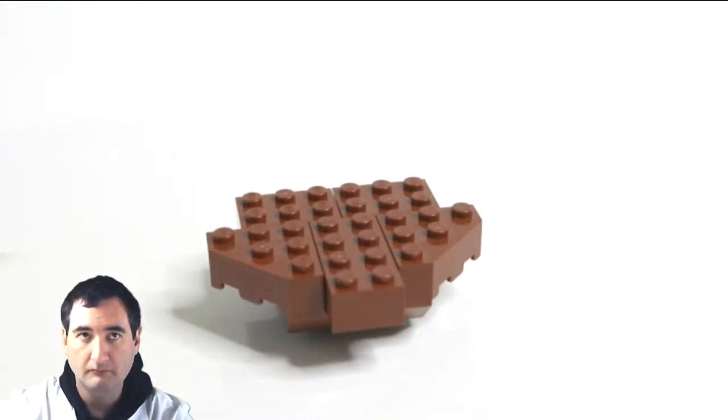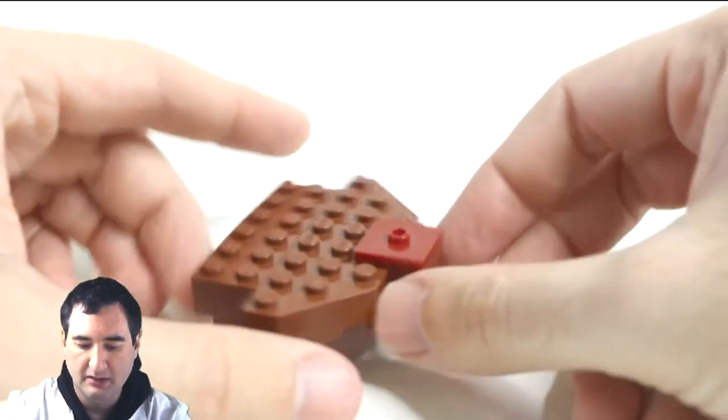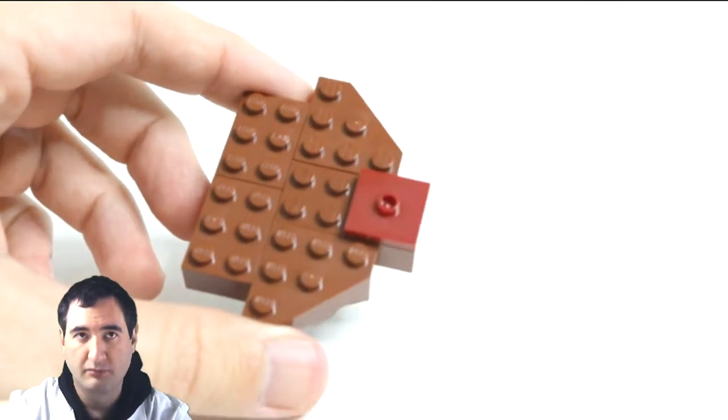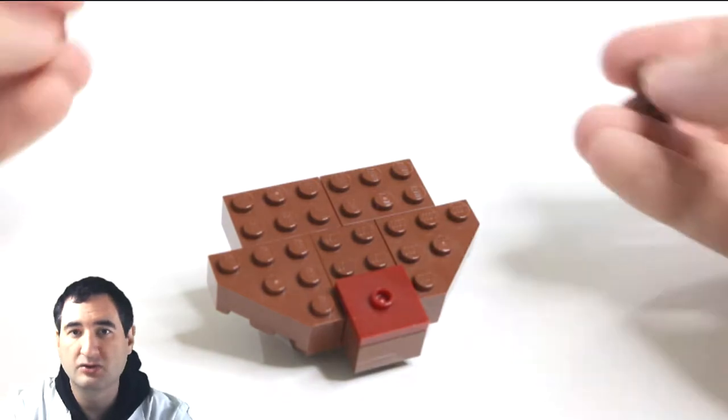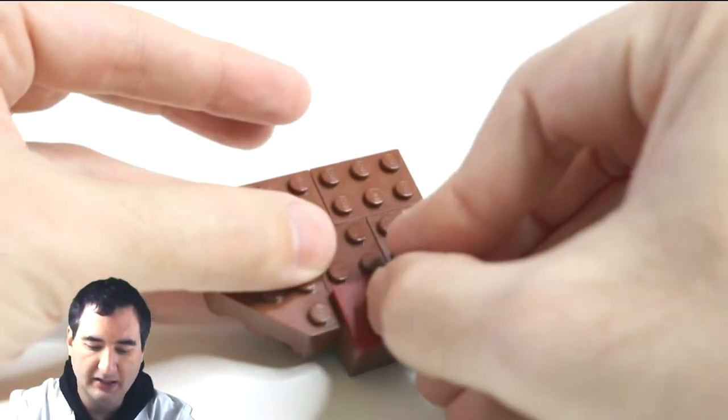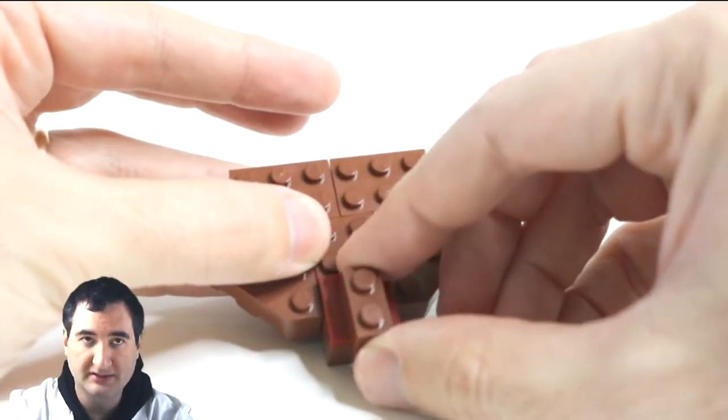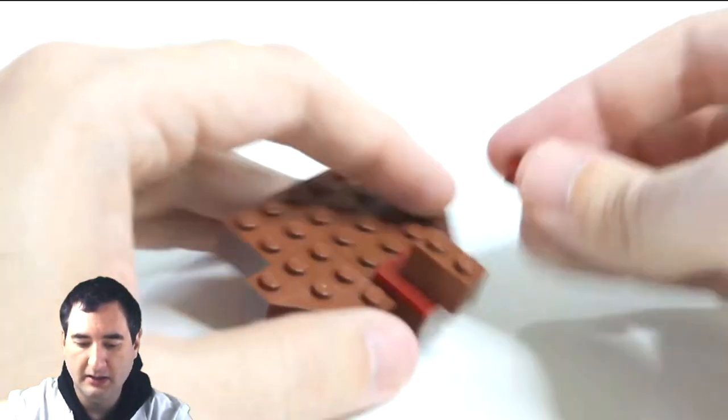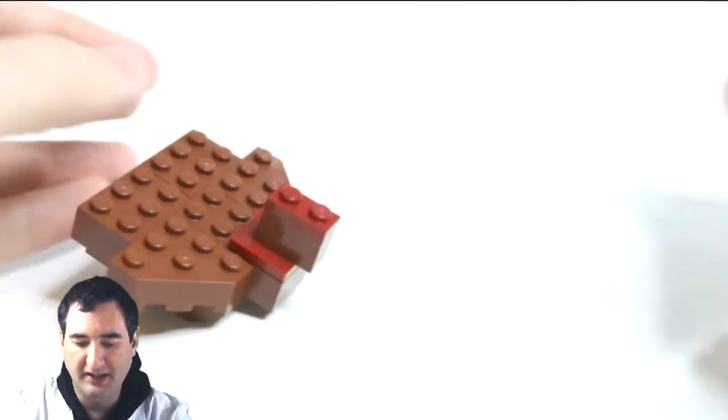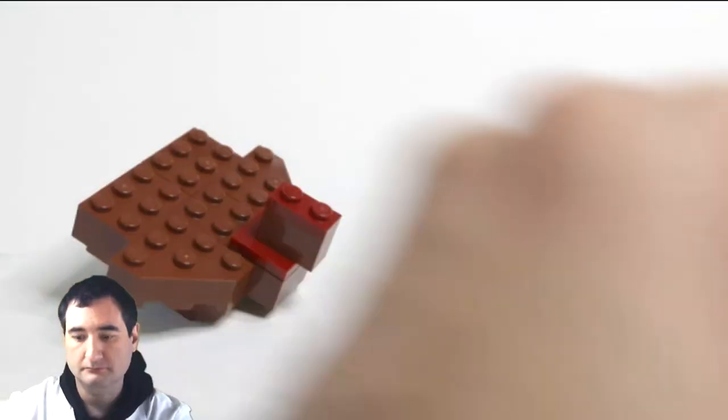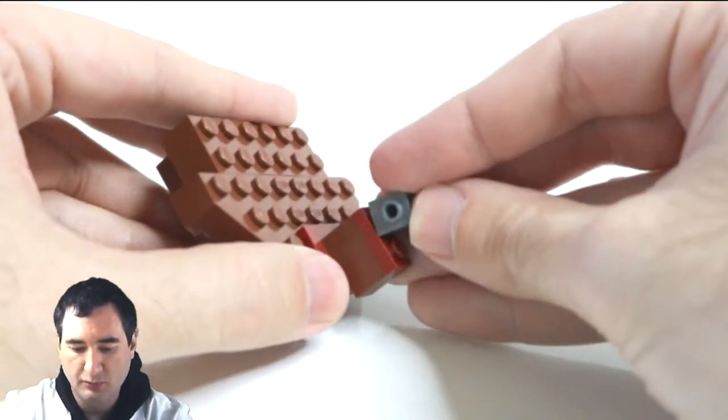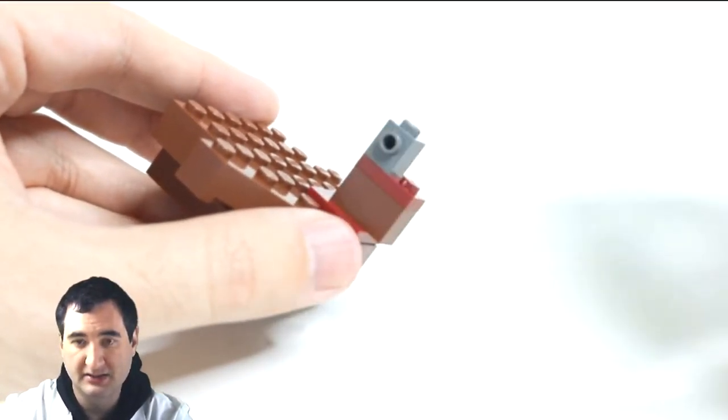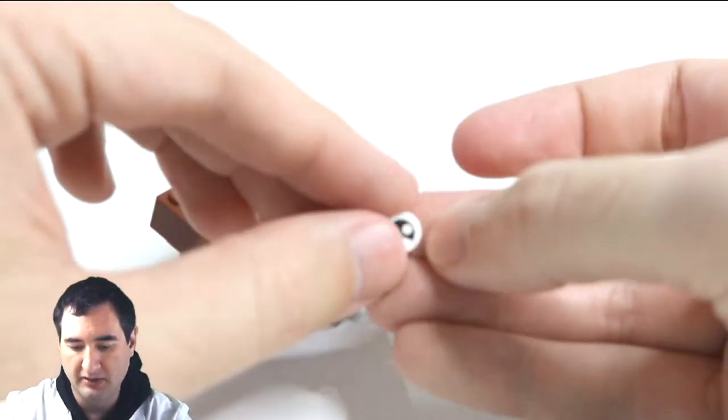So the next piece is a two by two to one plate. Now it's a slightly different color but that's okay, use what you have. Then we're gonna put a one by two brick on top of that, and then a one by two plate on top of that. We're going to finish the head with the one by one brick with the side stud, and then we're going to add the eyeball to that.